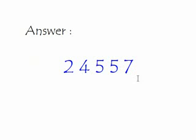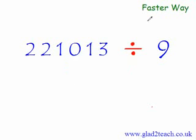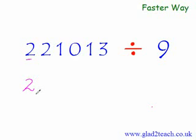So could you get it? I'm sure you must have got the first 3 to 4 digits of this answer. Well, even if you could not get the first digit right, not to worry. In the next 3 minutes you would have learned to divide even bigger numbers than this by 9 in 6 seconds. The faster way to divide any number by 9 is that you copy the first digit of the dividend as it is — and you have the first answer digit.